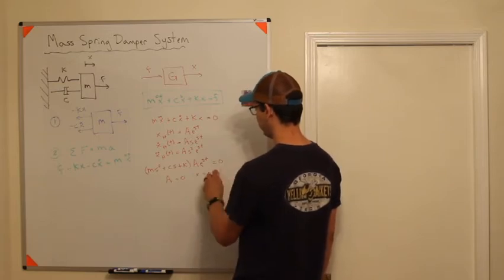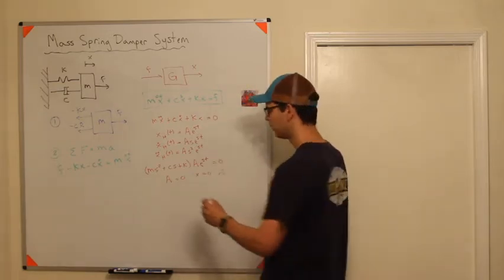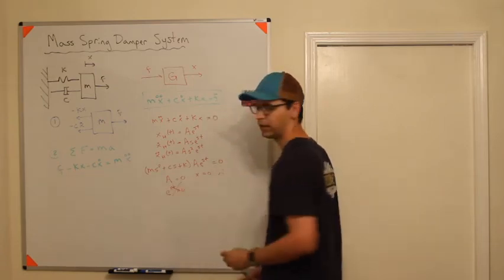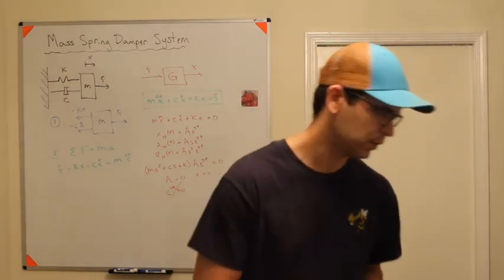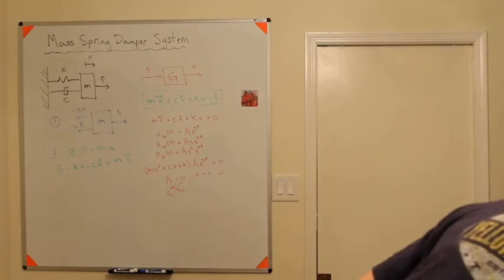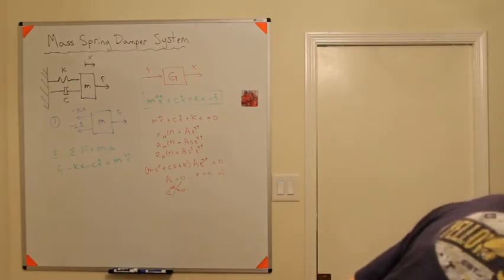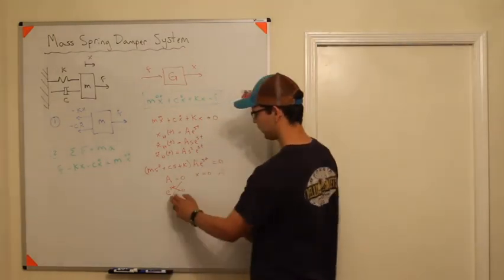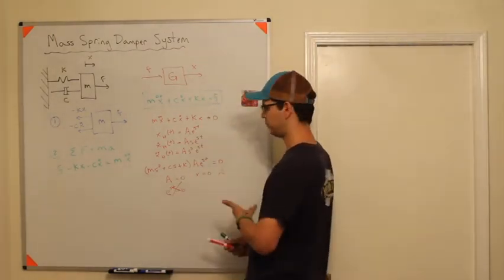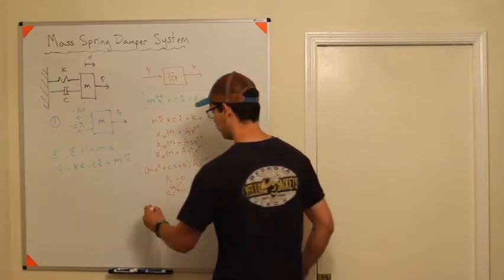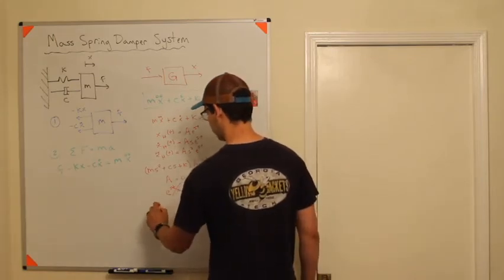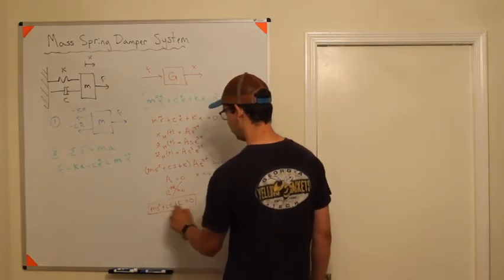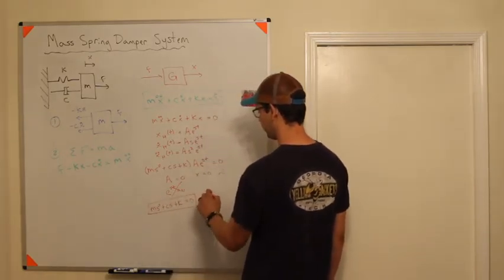You can have e^(st) equals zero, which is impossible - you can't have an exponential equal zero. So the only other option is for ms^2 + cs + k to equal zero, and this is a very important equation. This is your characteristic equation.